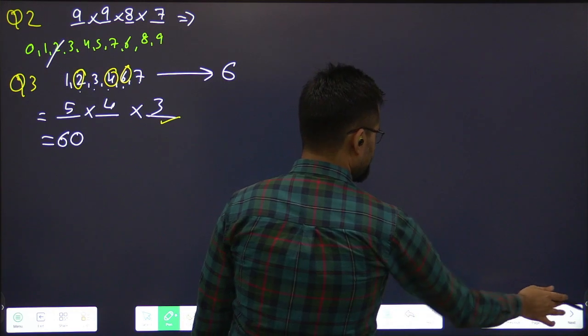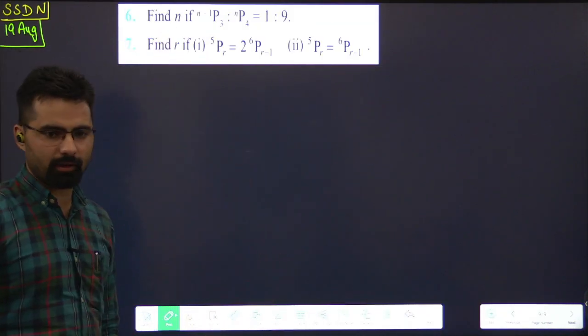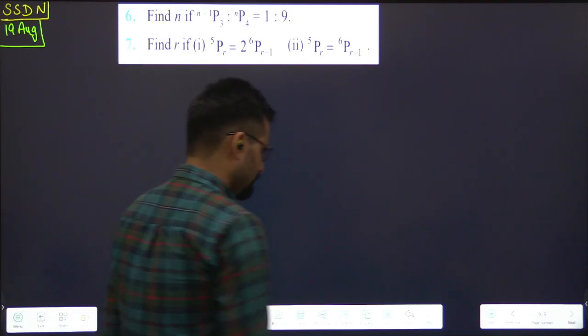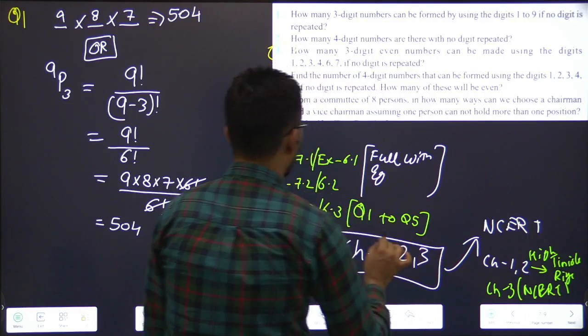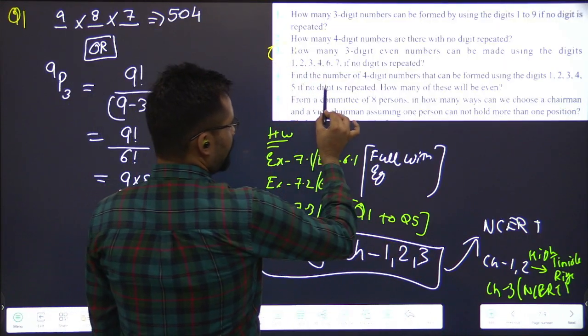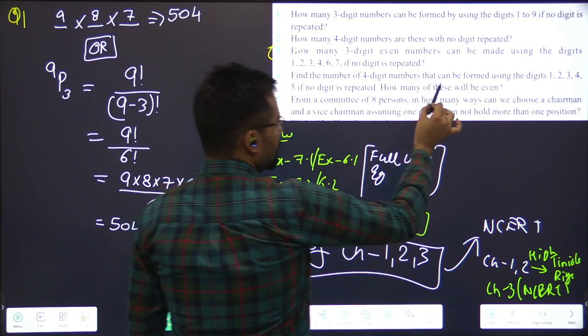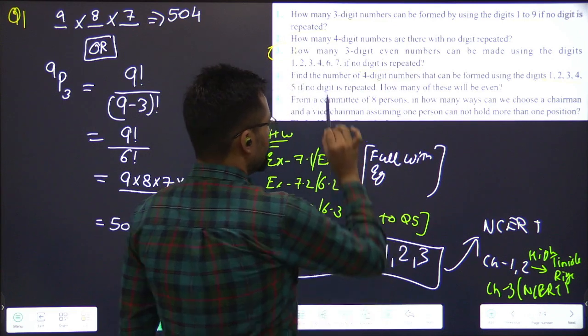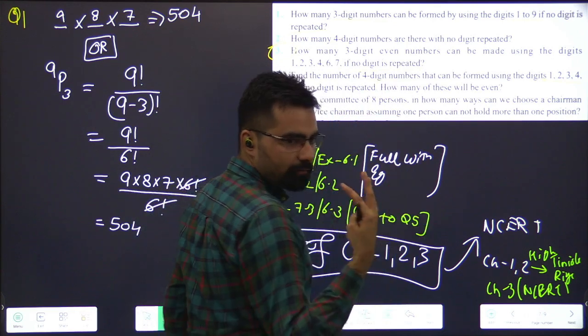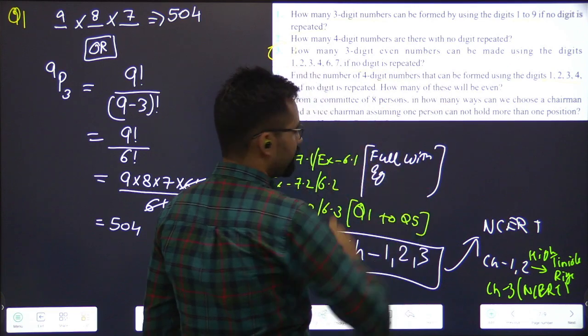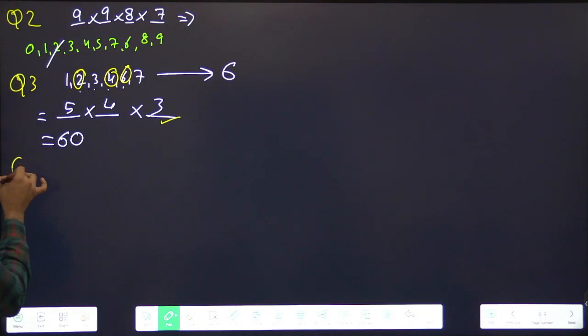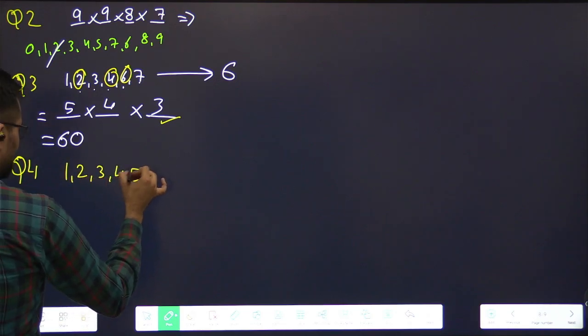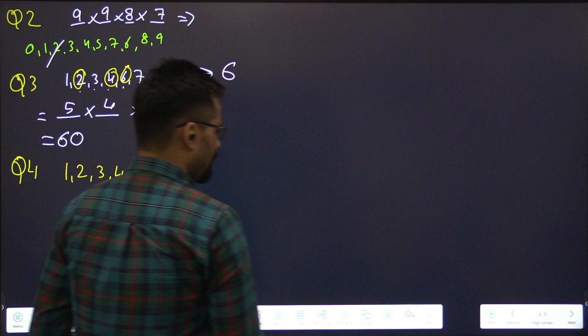So now we come to the next concept. Question number six. Do you want to attempt once? Question 4. In 4 there's a doubt. What is it? Find the number of 4-digit numbers that can be found using the digits 1, 2, 3, 4, 5. First let's do it normally. Number of 4-digit numbers to make. First 4-digit. Using what? 1, 2, 3, 4, 5. So first write what you need?